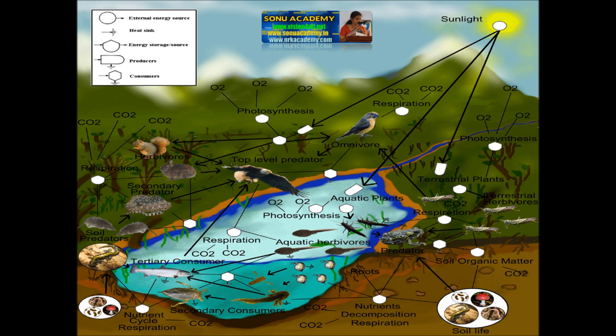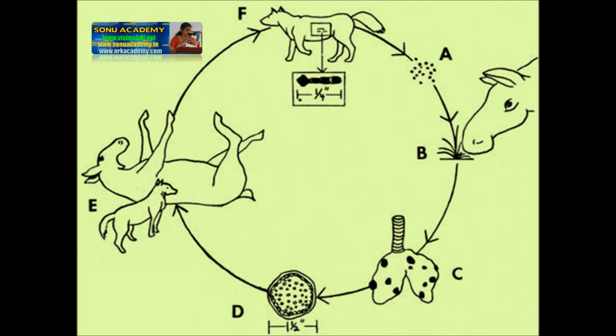Points to be remembered in this lesson: An association of two different organisms to obtain their nutritional requirements is seen in symbiosis and parasitism, which are examples of the mixotrophic method of nutrition. In symbiosis, both organisms are benefited. In parasitism, only the parasite is benefited, while the host becomes diseased and may even die.